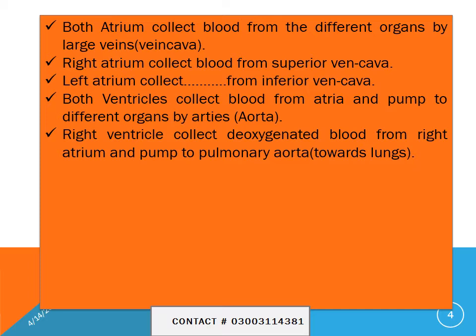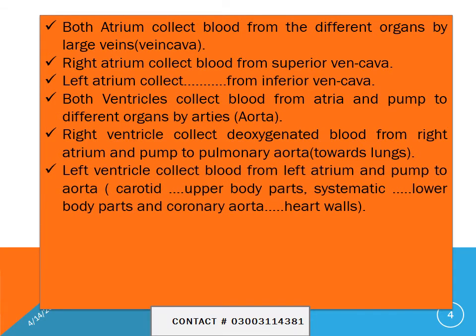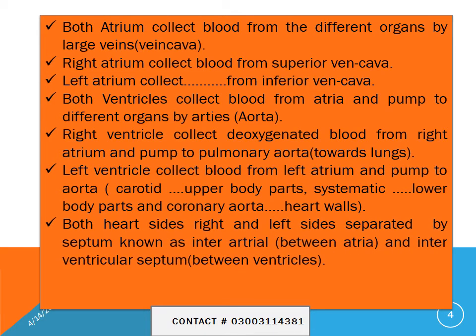The right ventricle collects deoxygenated blood from different body parts and pumps it towards the lungs. The left ventricle collects blood from the left atrium and pumps it towards the carotid, systemic, and coronary aorta — the carotid for upper body parts and systemic for lower body parts. Both the right and left sides of the heart are separated by the septum. The interatrial septum lies between the two atria, and the interventricular septum lies between the two ventricles.